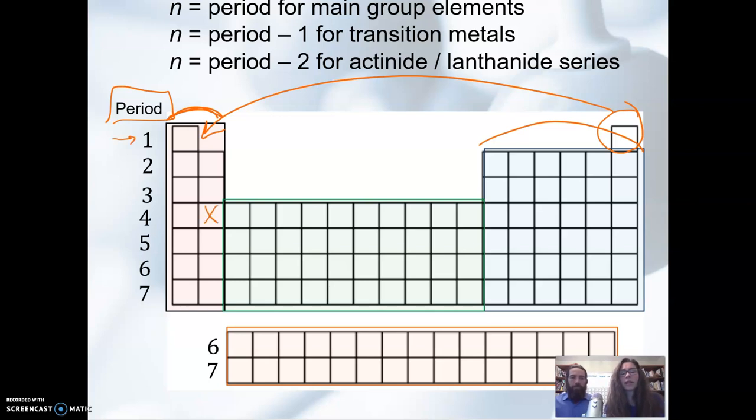So let's say this element here has an n of four. This element here has an n of three.